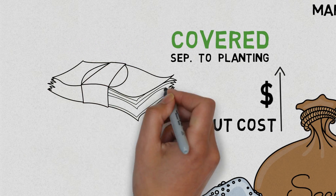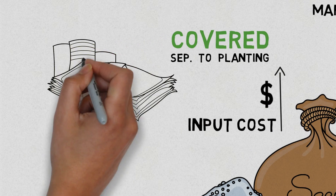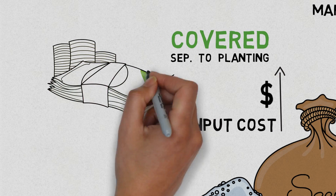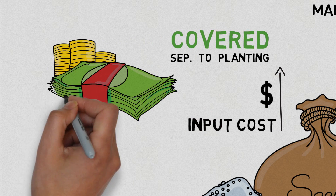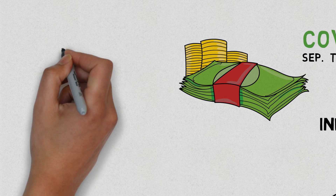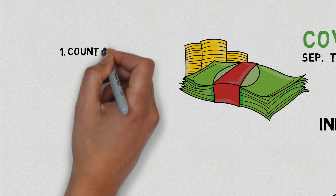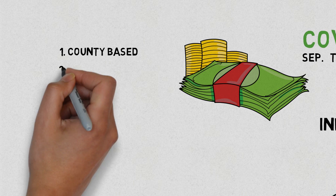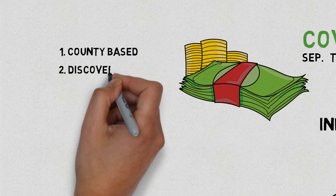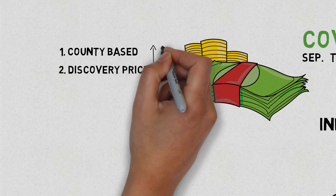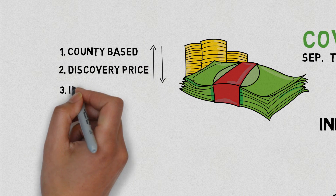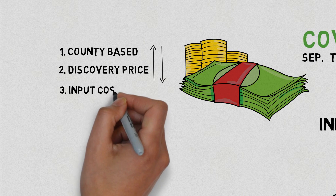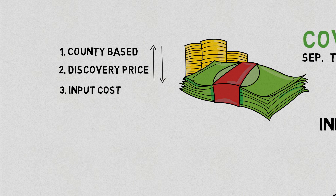Margin Protection should, all things being equal, pay losses faster than RP, and much more frequently. The biggest differences between Margin Protection and RP are: MP is a county-based insurance product like ARP; MP has a different discovery price, which could be higher or lower; and we have an added element of input cost, which means our revenue guarantee is taken against the expected gross margin, producing a much smaller deductible than an RP policy.